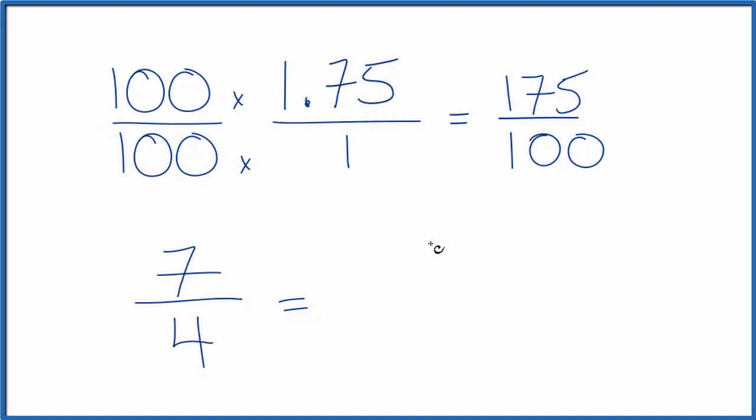If you want to write it as a mixed fraction, 4 goes into 7 one time with 3 left over, so we have 1 and 3 fourths. 1 times 4 plus 3 gives us 7 over 4.